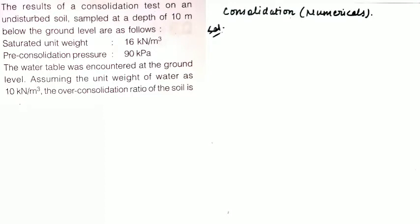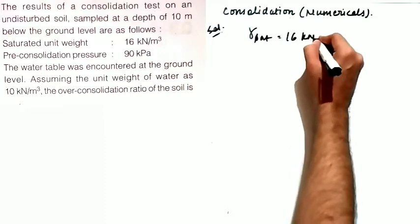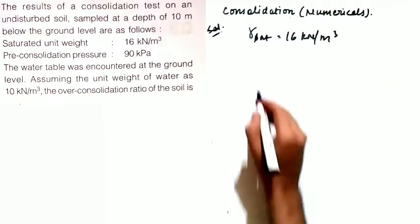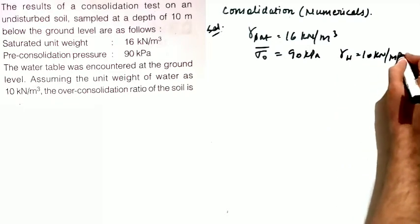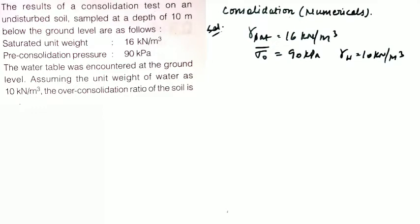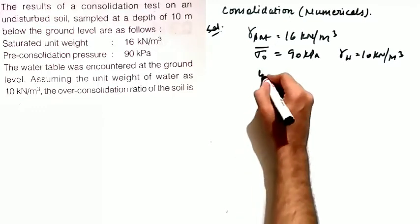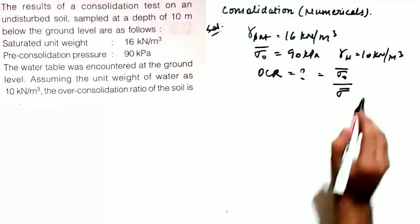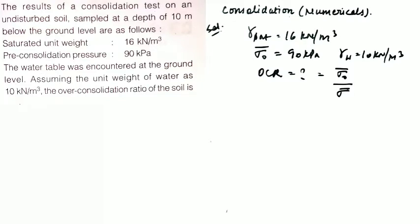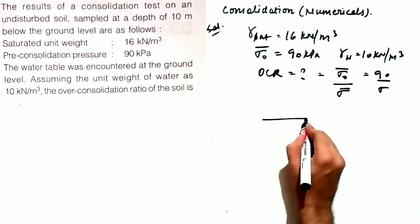The next question gives results of a consolidation test on an undisturbed soil sample at a depth of 10 meters below ground level. Saturated unit weight γ_sat equals 16 kN/m³, pre-consolidation pressure equals 90 kPa, and the water table is encountered at ground level. γ_w equals 10 kN/m³. You need to calculate the over-consolidation ratio OCR, which is pre-consolidation pressure divided by effective overburden stress.